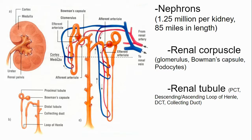One other thing to point out: we have the cortex on the outside and the medulla on the inside. It's the loops of Henle that dip down into the medulla, and the collecting ducts run through the medulla. But all the rest — the glomerulus and the proximal and distal convoluted tubules — are all up in the cortex.